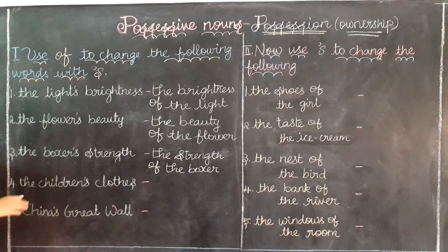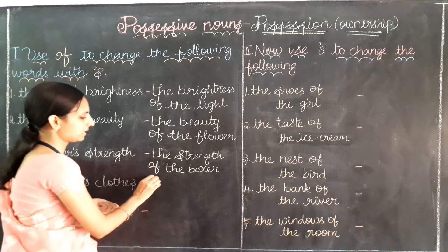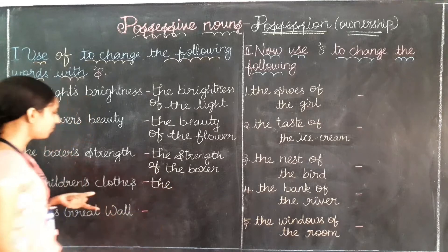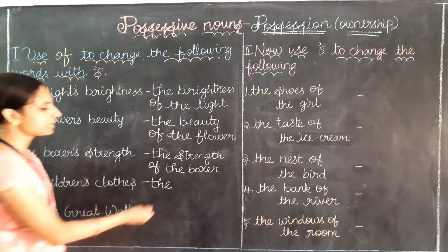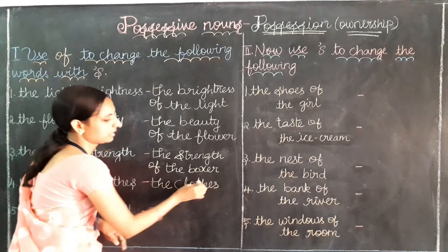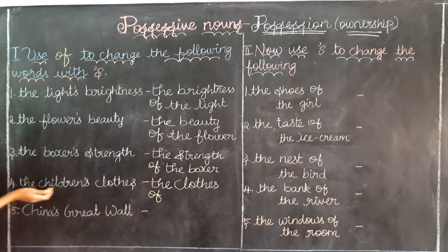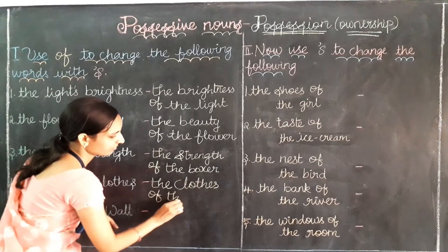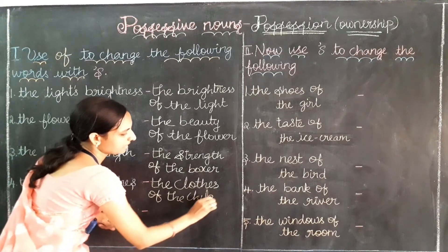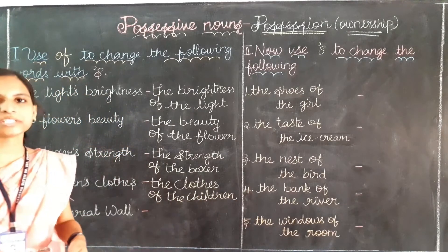Next: 'the children's clothes.' What the children own is clothes, so we write 'the clothes' first, then 'of,' then 'the children.' The answer is 'the clothes of the children.'